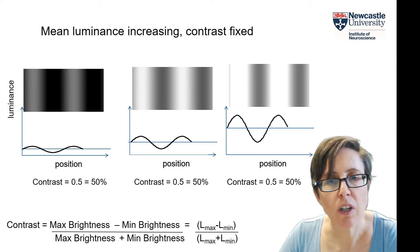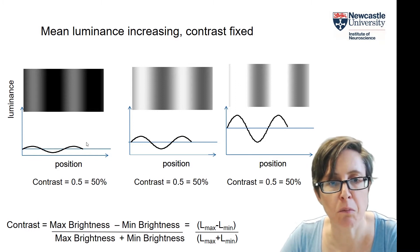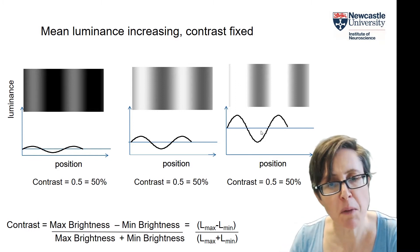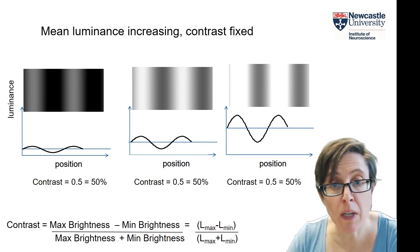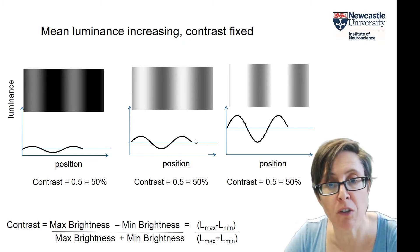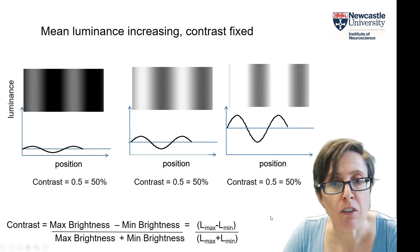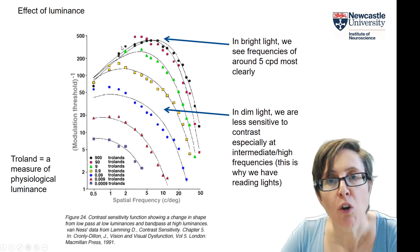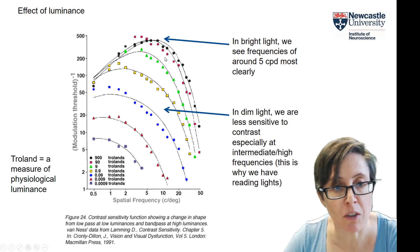We saw earlier that you can have the same contrast — say 50% — at several different luminances. When you measure the contrast sensitivity function, you choose what mean luminance you're going to use, and that actually affects the results you get. Here we see the contrast sensitivity function recorded at many different retinal illuminances.